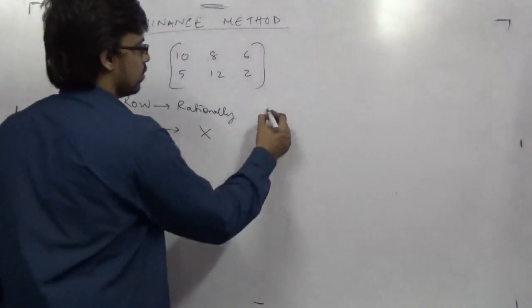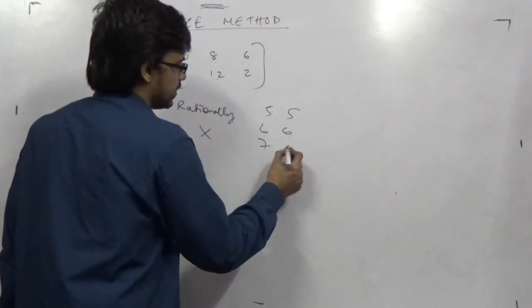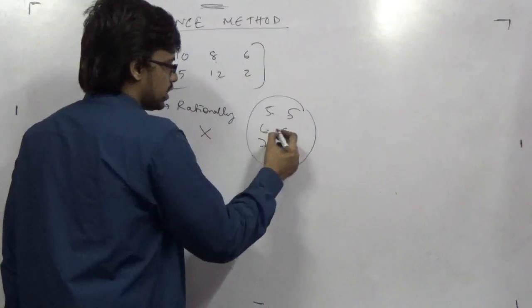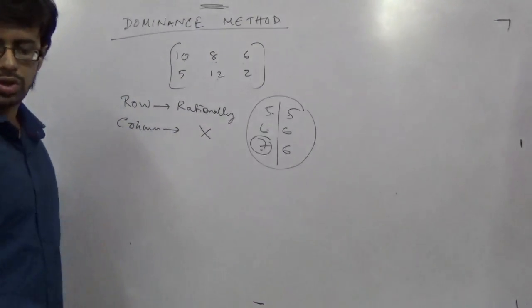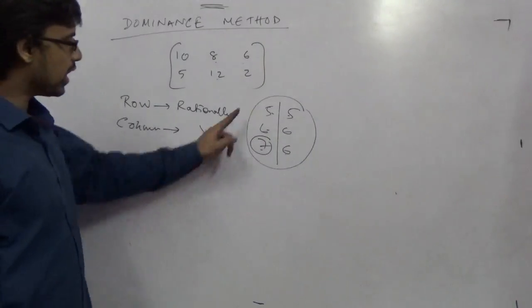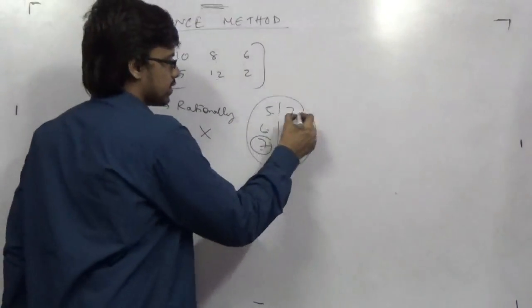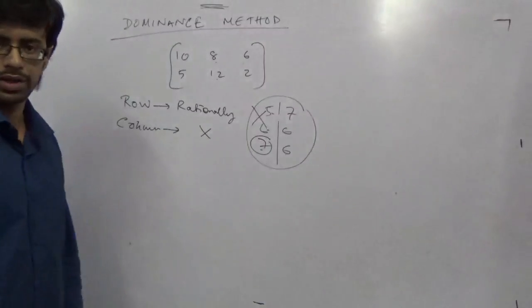If other values are, like 5, 5, 6, 6, 7, 6, here these two are equal but this is greater than this, so they follow the same pattern and the dominance rule is applicable. But if one is greater and another one is less, then no dominance will be applicable.